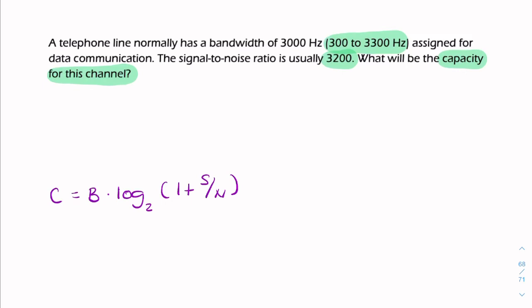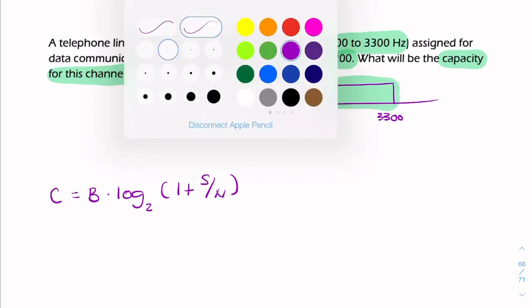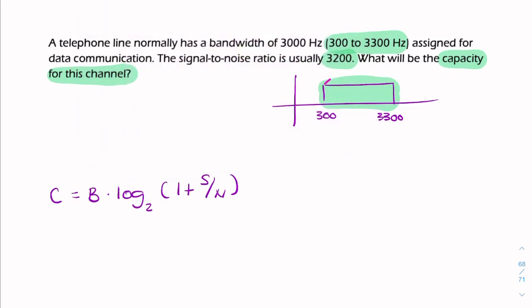The bandwidth of the channel is limited between 300 and 3300 Hz. Because we have a finite bandwidth channel, we need the actual bandwidth. Even though it's given in the question, we can find it by subtracting the lower from the higher frequencies.